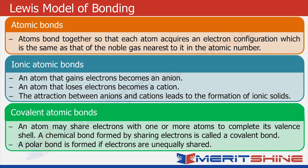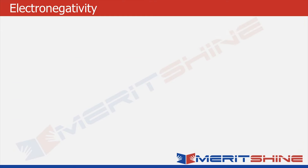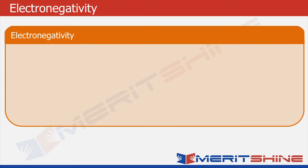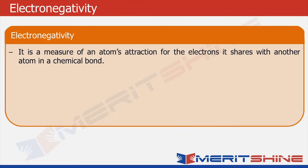So now you must be wondering what gives rise to the formation of ionic or covalent bonds. This concept is called electronegativity. It is a measure of an atom's attraction for the electrons it shares with another atom in a chemical bond, and it is measured on the Pauling scale.